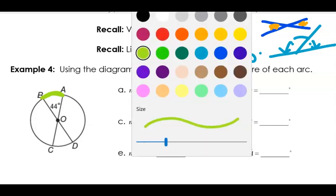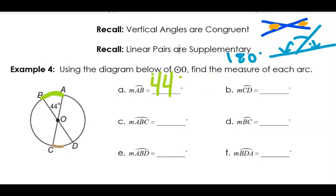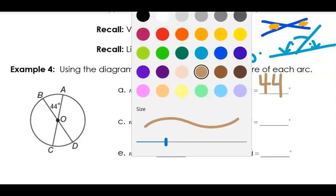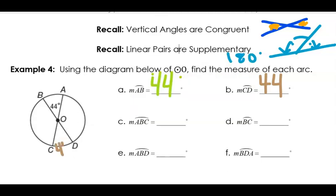The next thing I'm asked is what is arc C, D? If you notice, these angles are vertical angles. So that means that arc C, D is exactly the same because vertical angles are congruent. That means this angle inside here is the same — so I know that this piece here is 44 degrees.